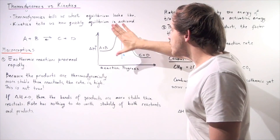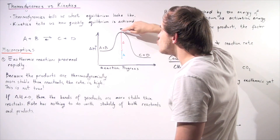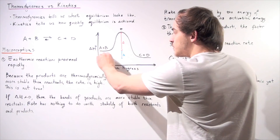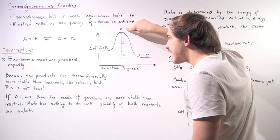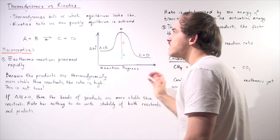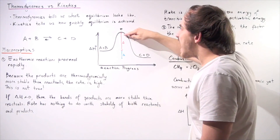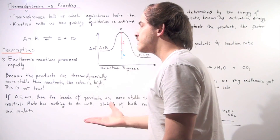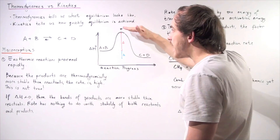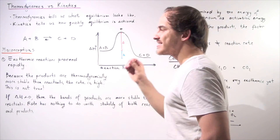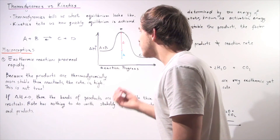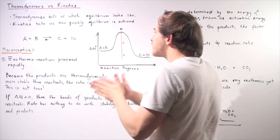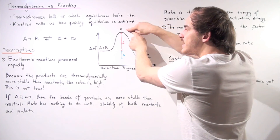Where do we find kinetics in this diagram? Kinetics is given by the red delta H, which represents the difference in energy between our reactants and our transition state. The higher this energy barrier (the mountain) is, the lower the rate of our reaction. The lower the bump, the lower the energy of our transition state, and the quicker our reaction takes place. The stability of the products and reactants deals with thermodynamics, but the stability of our transition state deals with kinetics.